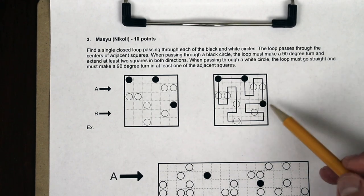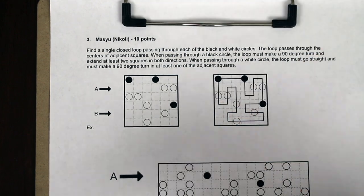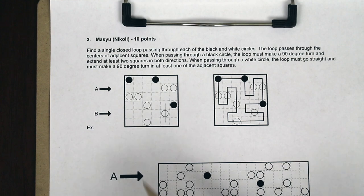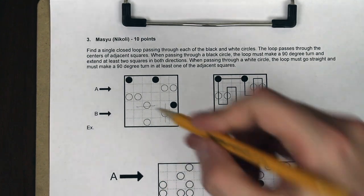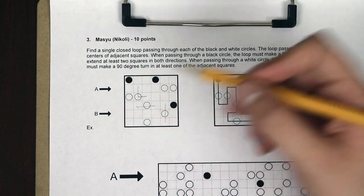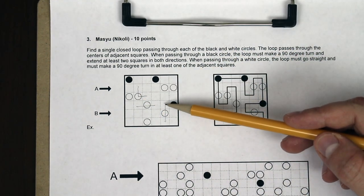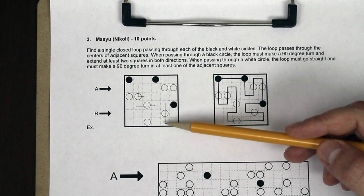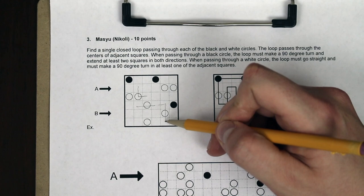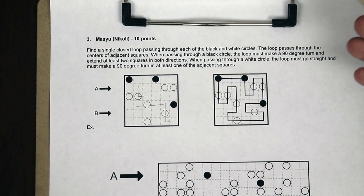When the loop goes through each of the circles, there are certain properties it has. When it goes through a white circle, it must go straight through. Something like turning would not be okay. In addition, in one of the squares on either side of the loop that passes through the white circle, it has to turn — it could turn on either side or both, but it has to turn in at least one of those squares.